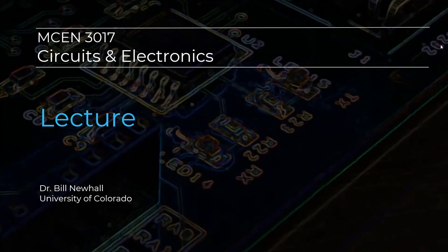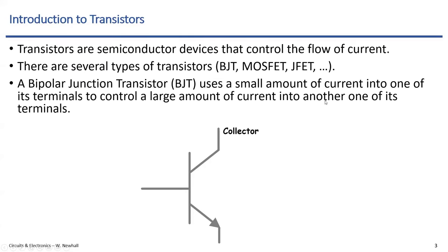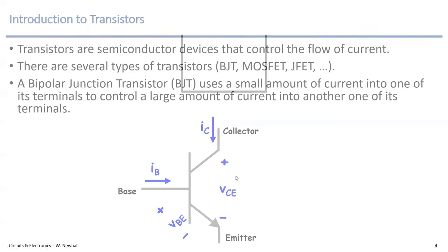Last time we started to talk about transistors. I showed you a schematic symbol of the transistor and named the terminals collector, base, and emitter. I talked about the important currents — the base current and the collector current — and the two important voltages: the base-to-emitter voltage and the collector-to-emitter voltage. I started this animation — here's a fluid flow analogy of a transistor.